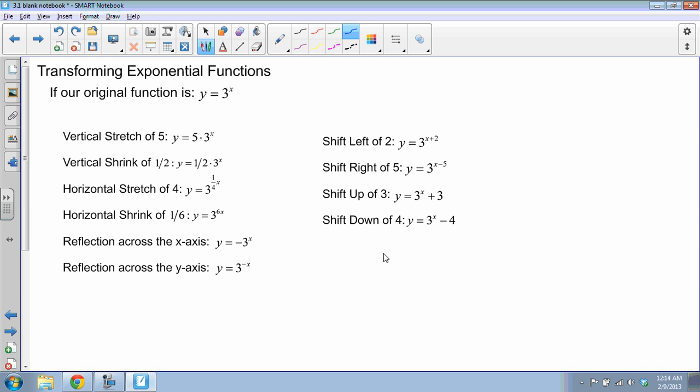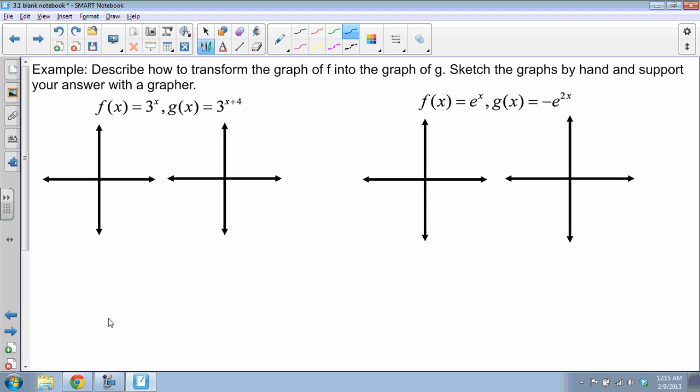The shifts are pretty easy to remember. If it's in the exponent, that's left or right and we take the opposite sign. So x plus 2 shifts left 2, x minus 5 shifts right 5. If it's outside my exponent, it's up or down, so I'm shifting up 3 and shifting down 4. These are just examples of different cases, and we can combine them in lots of different ways. These are pretty easy to graph without using your calculator because of those transformation rules.